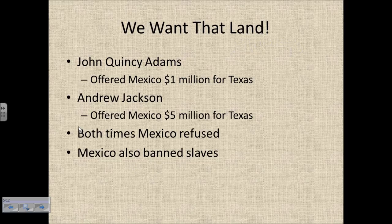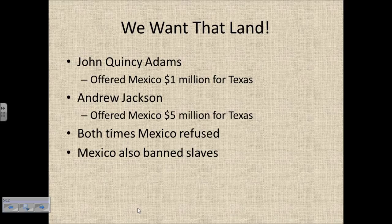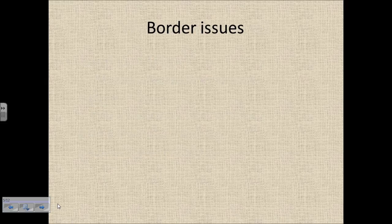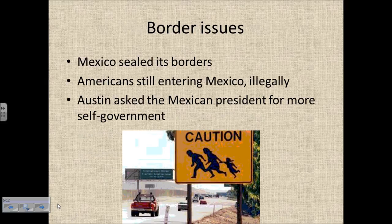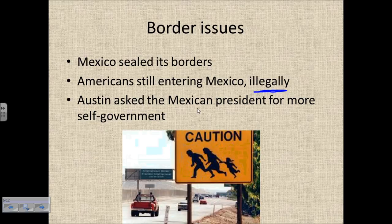Texas had been sought after by Americans for some time. John Quincy Adams offered Mexico $1 million for it; Andrew Jackson offered $5 million. Both times Mexico refuses. Mexico then bans slavery, so Americans are losing the farmland access they wanted. Because of the flood of Americans entering the area growing cotton and bringing slaves, Mexico starts to seal its borders, creating an immigration issue, with many Americans still entering Mexico illegally.